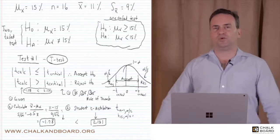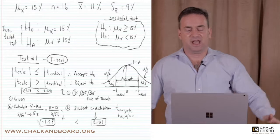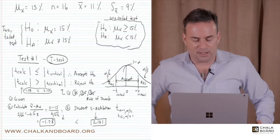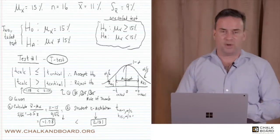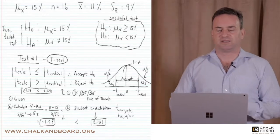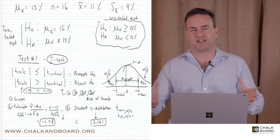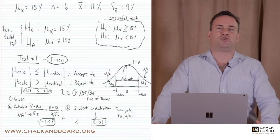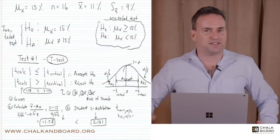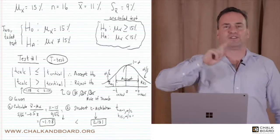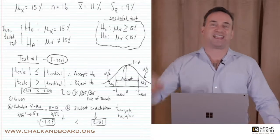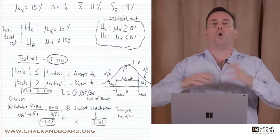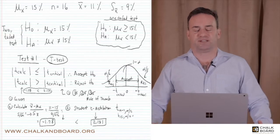For the calculated t, there are two ways to get it: it's either given to you, or you use the formula. The formula for the calculated t is: you take the point estimate — the sample mean — subtract the hypothesized value, which is the population mean, and divide by the standard error of the sample mean. Note that it's s of x-bar, not s of x. S of x was 9%; s of x-bar is different — it's the standard error of all possible sample means we could get from 16 observations.